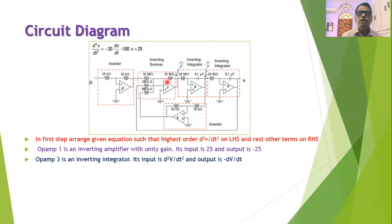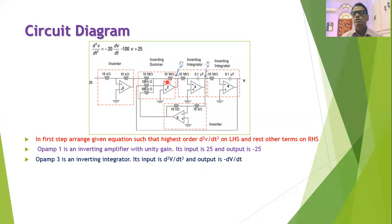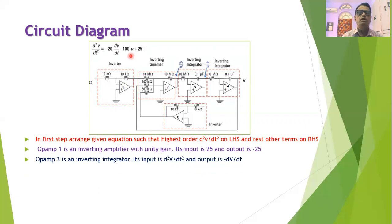Operational amplifier number two used in the circuit is basically an inverting summer, which consists of three input terms. As shown in the equation, the three input terms must be according to the differential equation.